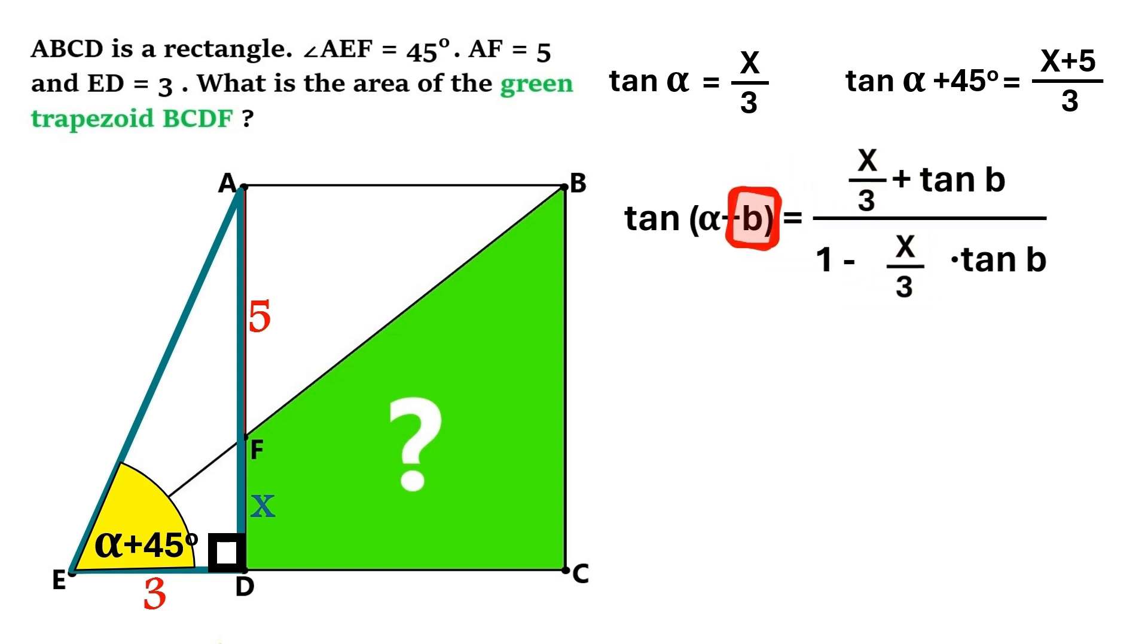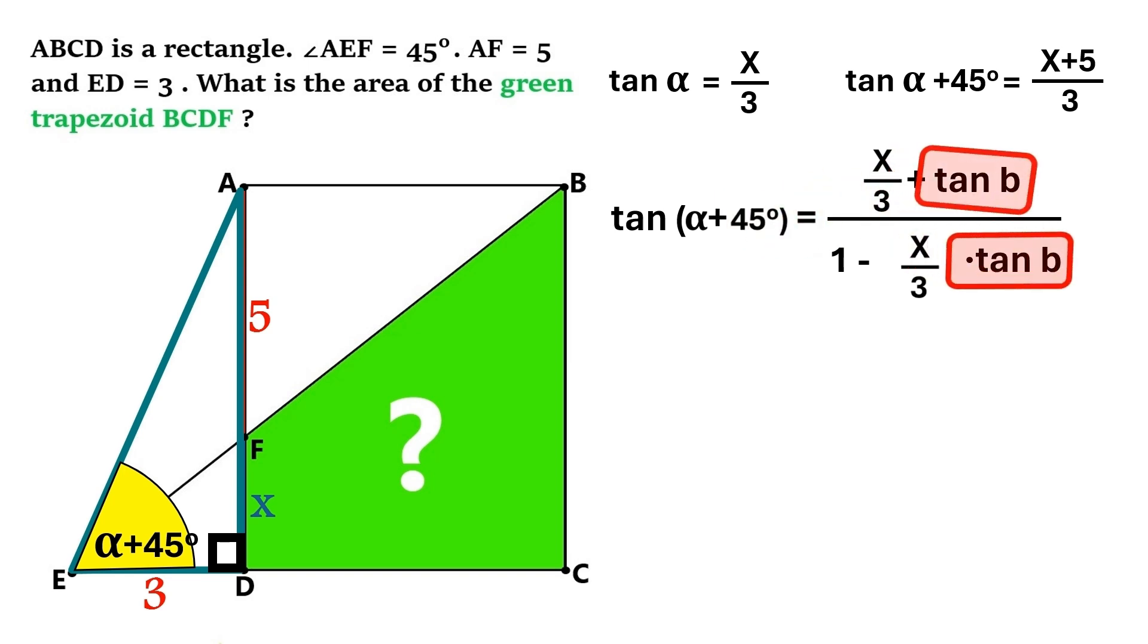Next, we change this B to 45 degrees, because we've got an alpha plus 45 degrees in our question. And of course, we also need to change this tangent piece to tangent 45. And tangent 45 has a fixed value, which is 1. And finally, we know that tangent alpha plus 45 degrees equals x plus 5 over 3. So we are going to substitute this with that.